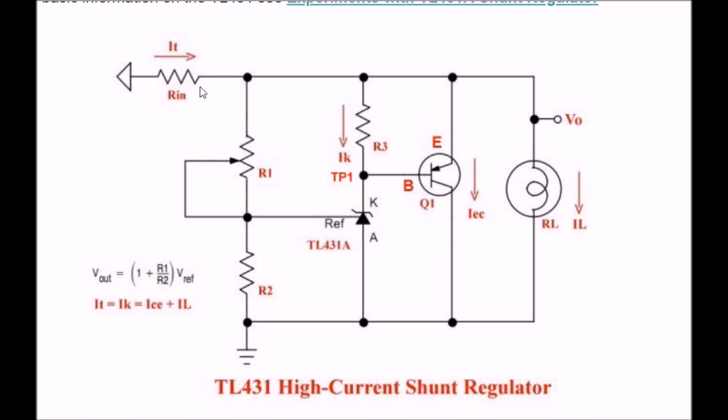How this works. You set IK by adjusting R1 and the R2-R1 voltage divider configuration. Again, your voltage out is 1 plus R1 divided by R2 times Vref times 2.5 volts. What you're going to do is, you notice that Q1 emitter is connected to the plus side of the power supply. The collector goes to ground.